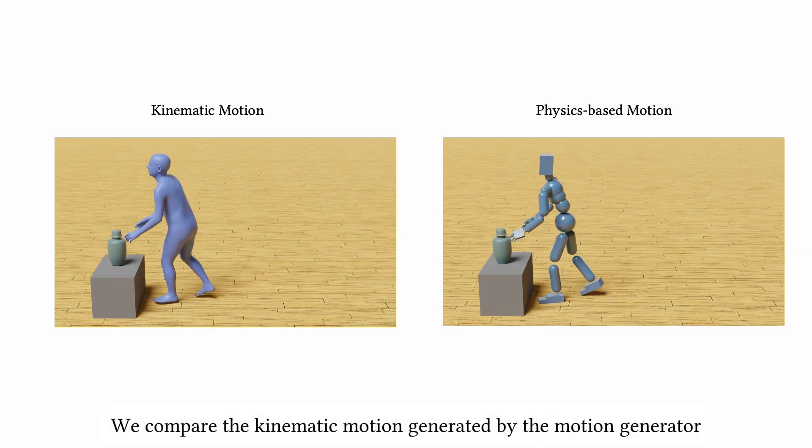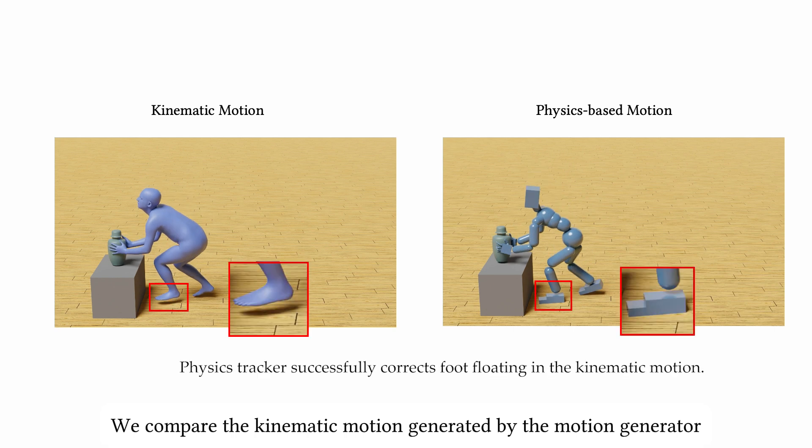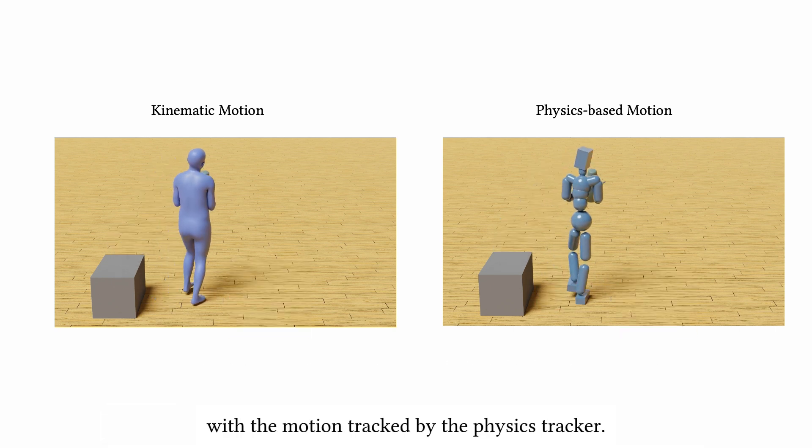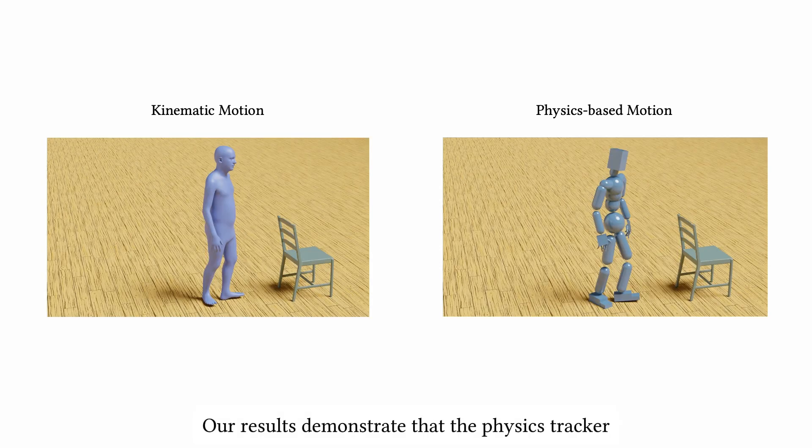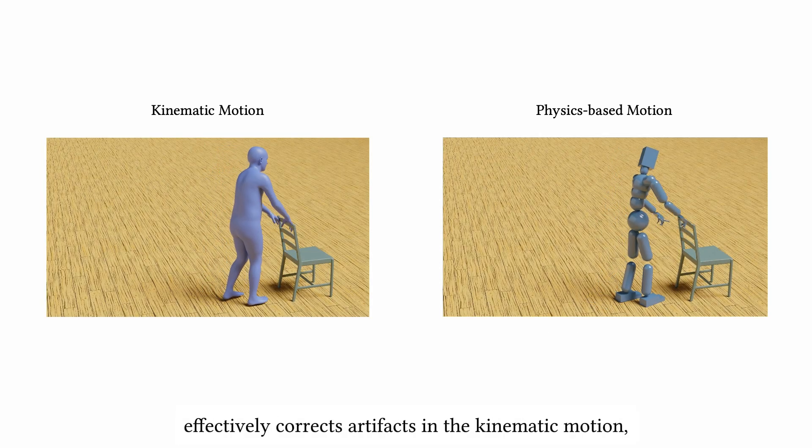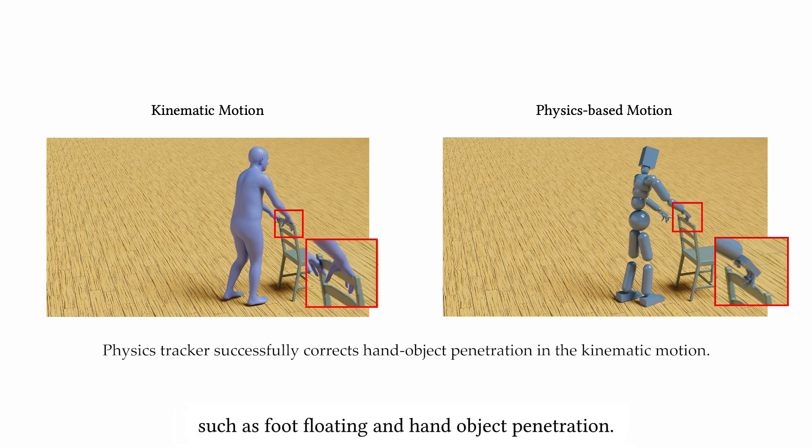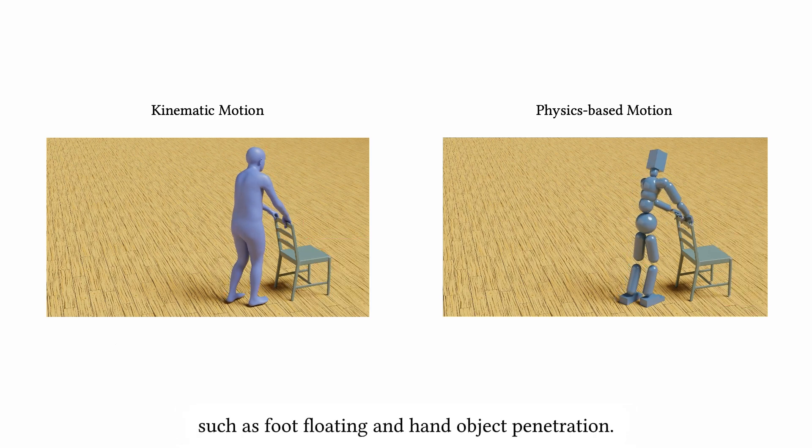We compare the kinematic motion generated by the motion generator with the motion tracked by the physics tracker. Our results demonstrate that the physics tracker effectively corrects artifacts in the kinematic motion, such as foot-floating and hand-object penetration.